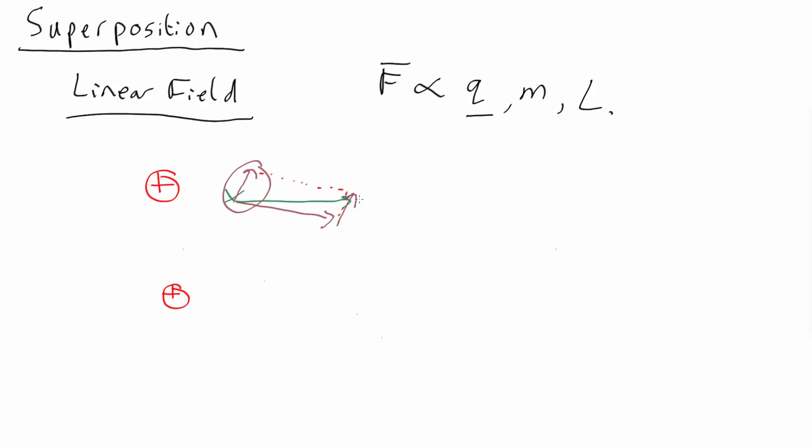That's how you do it graphically. You can also do it by components. If, for example, you know that the field from here is, let's call it, x1, y1, z1 components, and the field from here is x2, y2, z2.